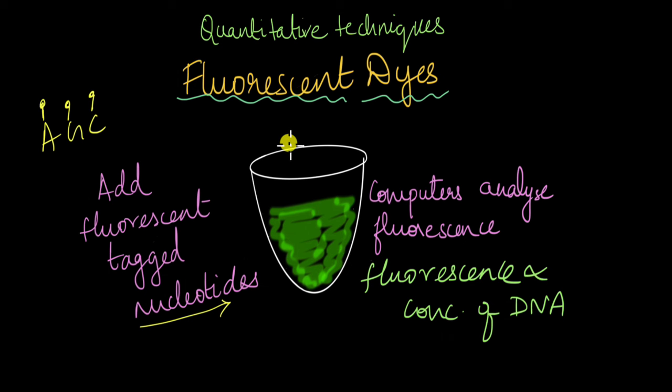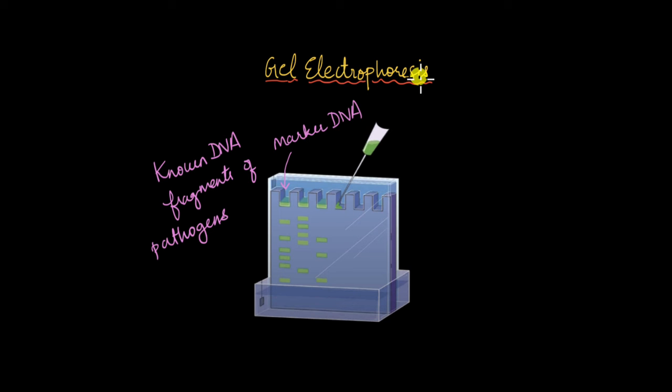Another method uses gel electrophoresis. If you're not familiar with it, check out our video on gel electrophoresis. We use agarose gel to separate DNA fragments based on size. We have an agarose gel setup with small wells to load DNA. Before loading our sample DNA, we take a marker DNA sample containing known DNA fragments of pathogens we're testing for. If testing for a bacterial pathogen, we have DNA fragments of that bacteria. We load the marker DNA and run the electrophoresis setup.